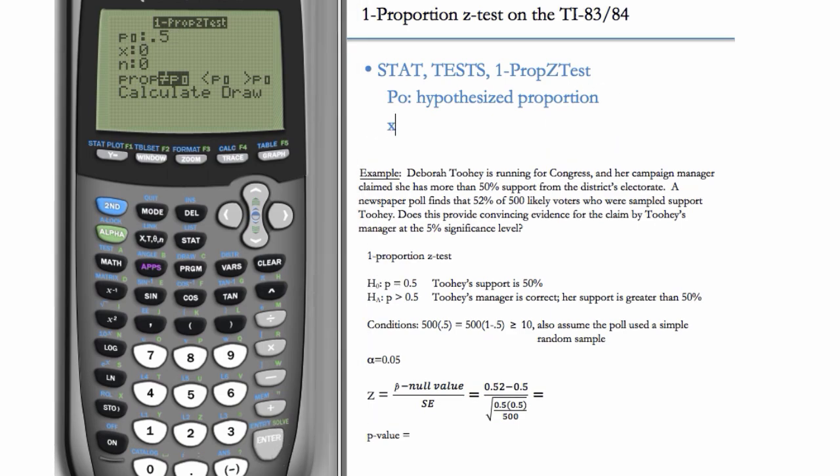And then we also need X. X here is the number of yeses in the sample. So whereas P sub 0 is a proportion, X is a number, and it's the number of actual yeses in the sample. So here I know that 52% of the 500 respondents said yes. So I can do that calculation in my head, or I can do it on the calculator here. So I need 52% or 0.52 times 500. So this is 52% of the 500 is 260. So this is how many yeses were in the sample. This has to be an integer. So if this calculation comes out not to be an integer, you have to round it to the nearest integer. Otherwise, you'll get an error.